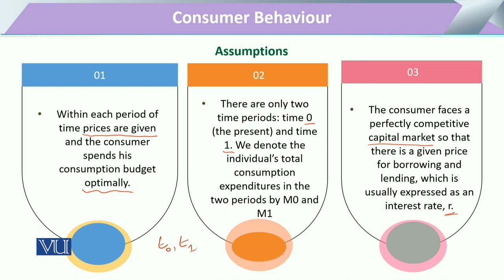Whatever income the consumer is not spending today he is keeping for the future. The consumer has savings — a portion of income — which he can invest or keep, giving him the probability to earn a certain income. Similarly, if he borrows more today he will pay interest. The interest rate R is the price — either received when lending or paid when borrowing — and in the competitive market it is fixed.